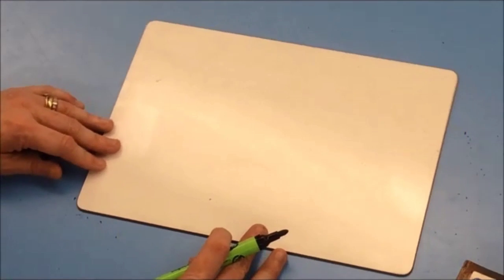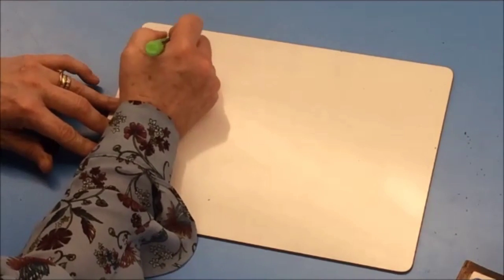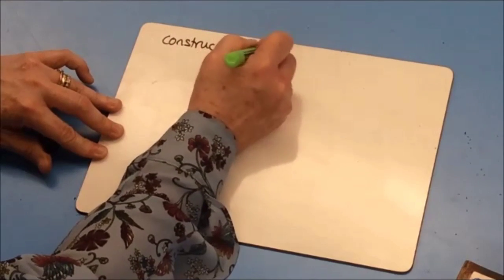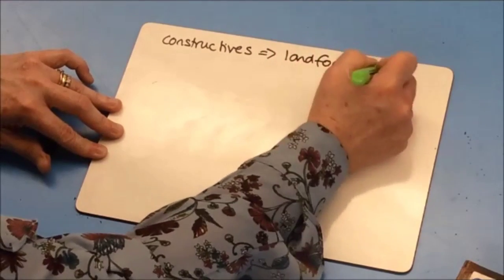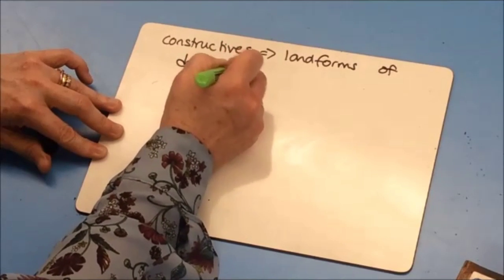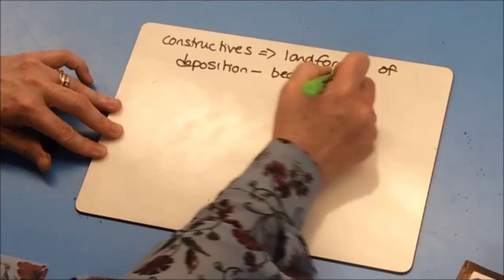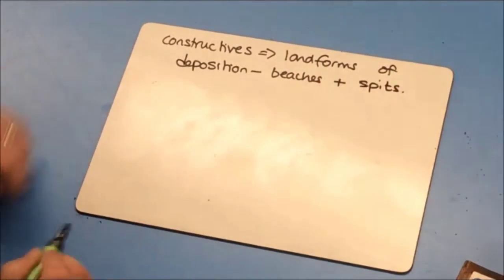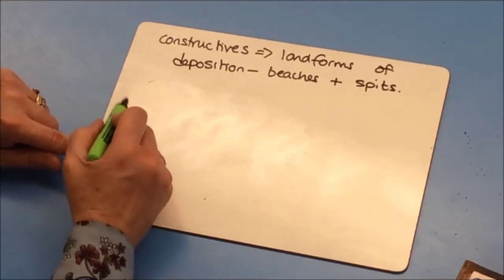Now let's look at the role of constructive waves in shaping the coastline. Constructive waves create landforms of deposition, such as beaches and spits. Quite a few students struggle with spits, so watch carefully.